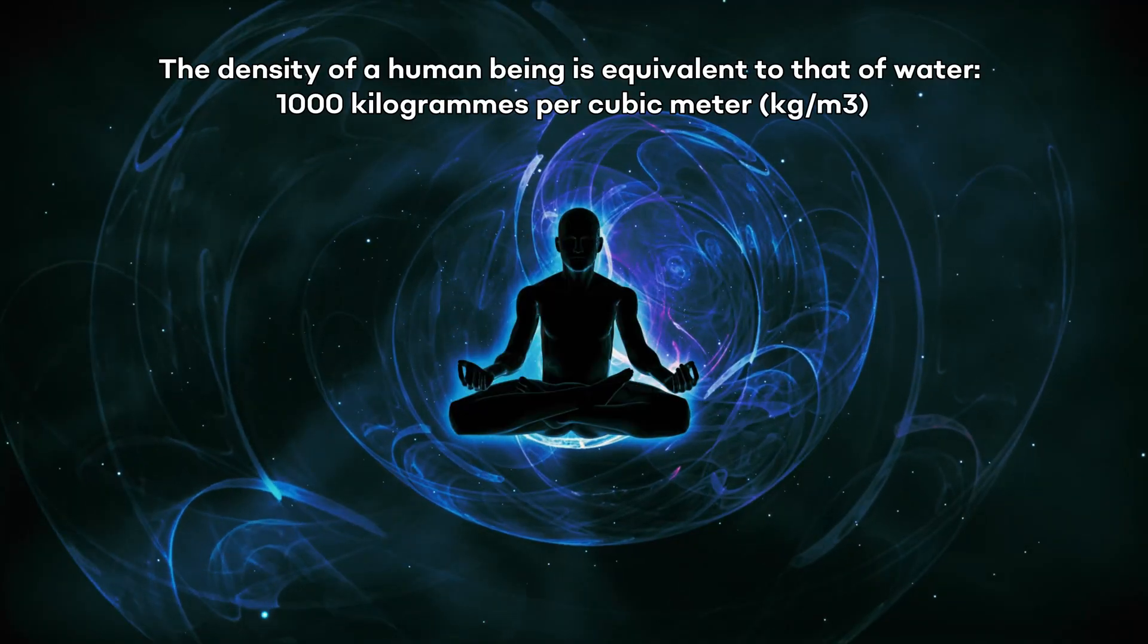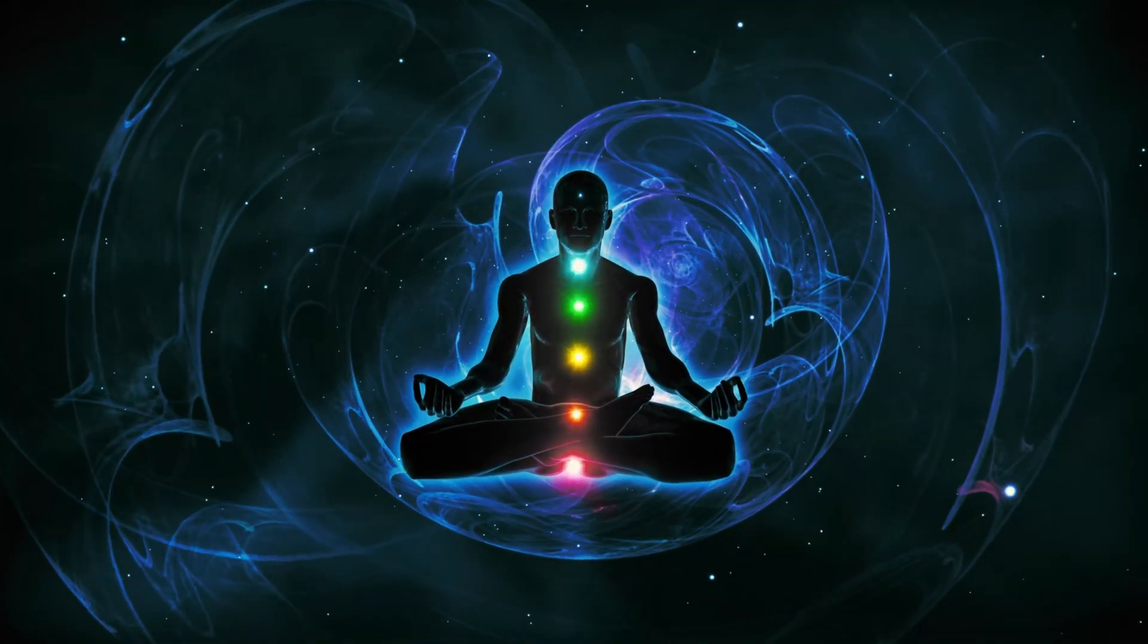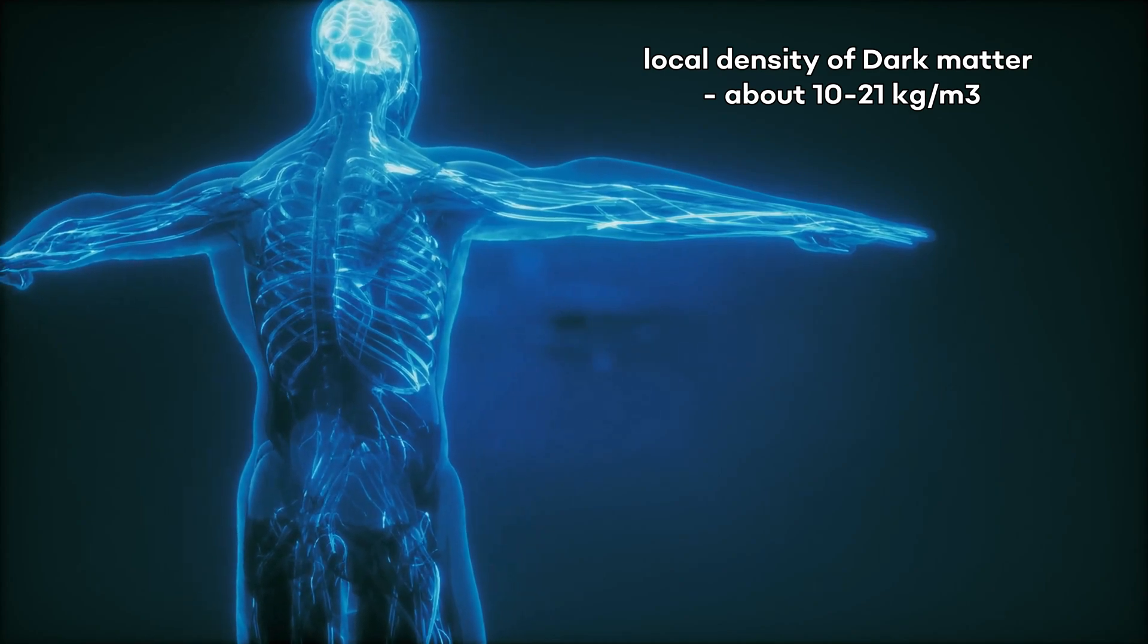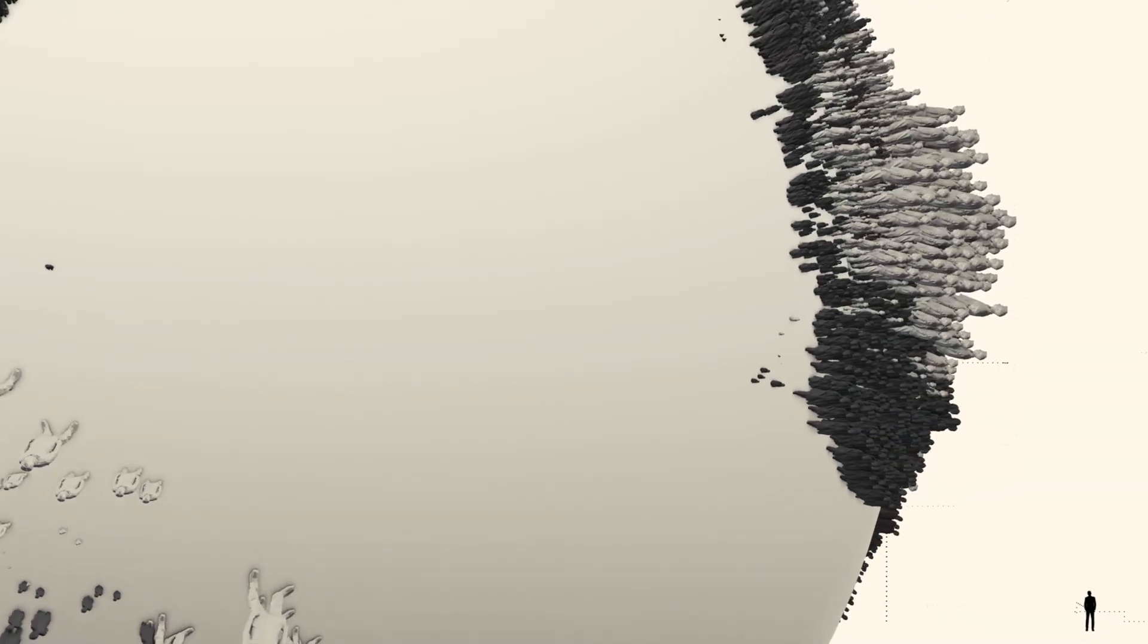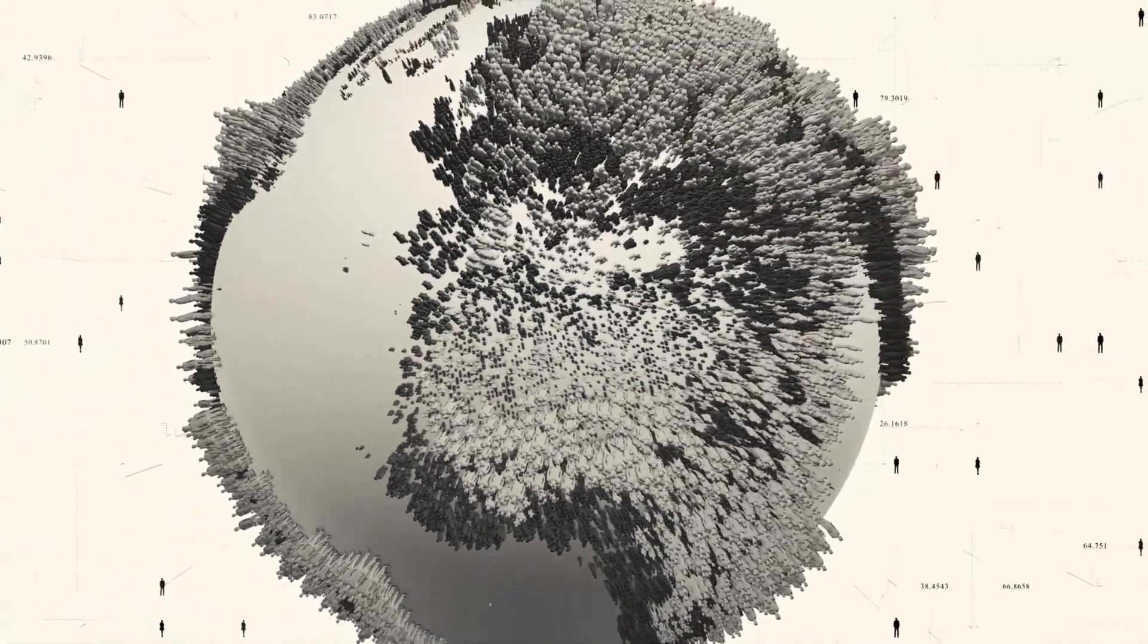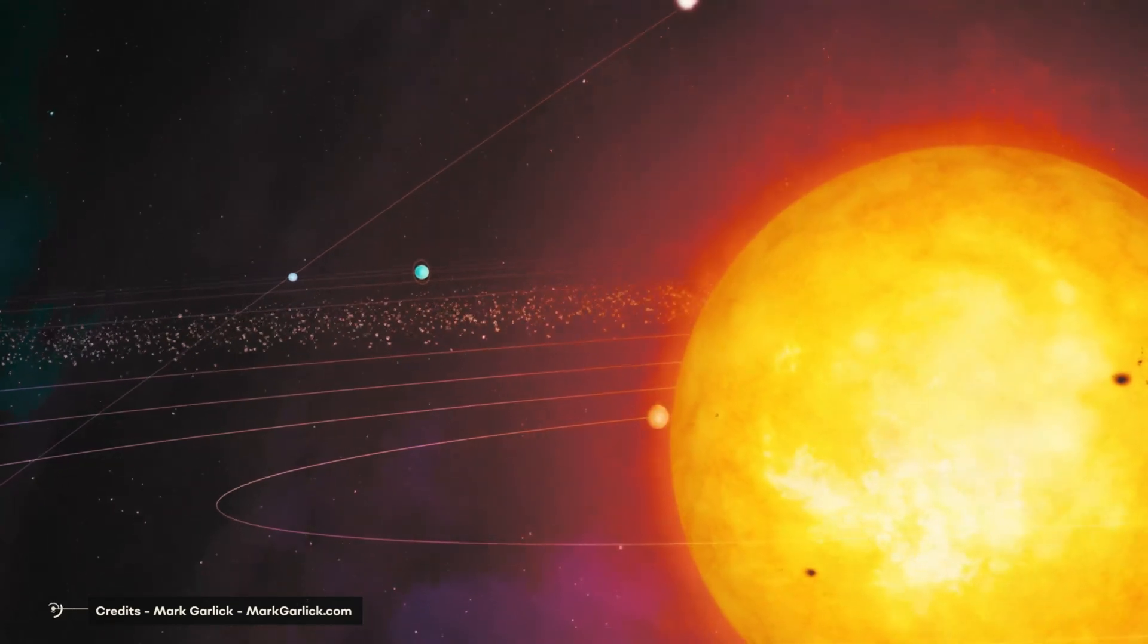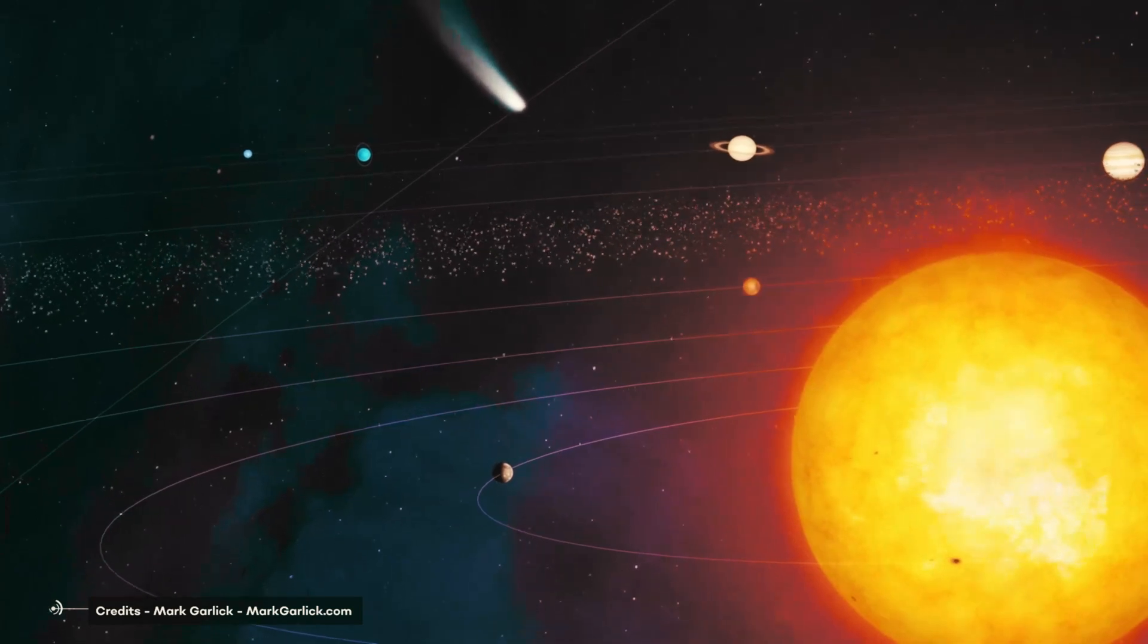The density of a human being is equivalent to that of water, 1,000 kilograms per cubic meter. If we take a look at the most realistic simulations that we can come up with, the local density of dark matter where we are is even less, about 10 to 20 kilograms per cubic meter. If we added up all the dark matter within all the people on Earth at any given time, it would amount to less than a single nanogram. If you added up all the dark matter in the solar system all the way out to Neptune's orbit, it would only amount to around 10^17 kilograms, the mass of a moderately big asteroid.